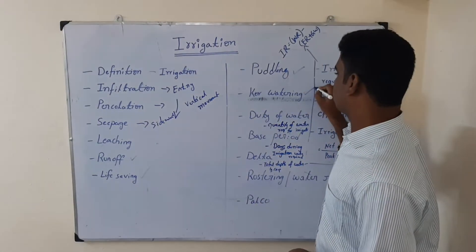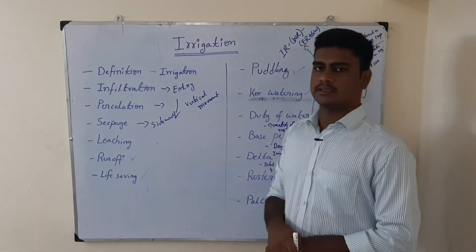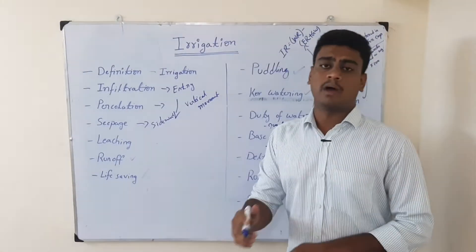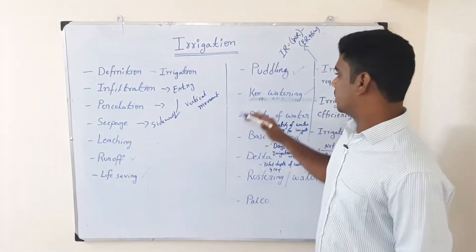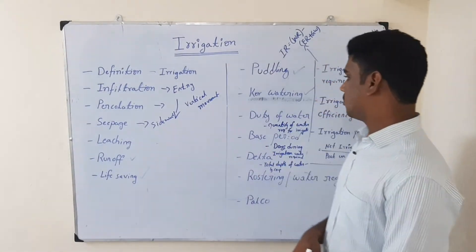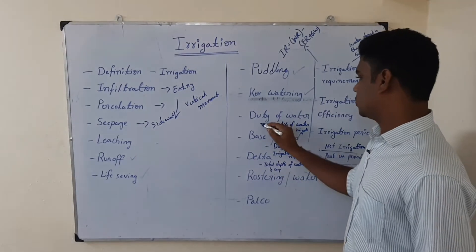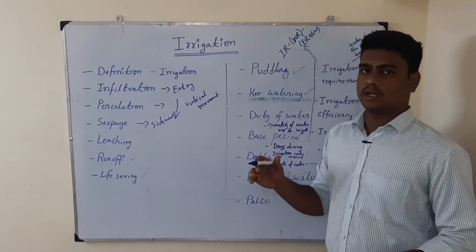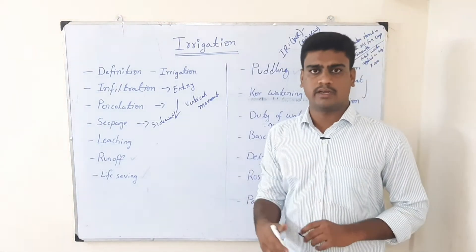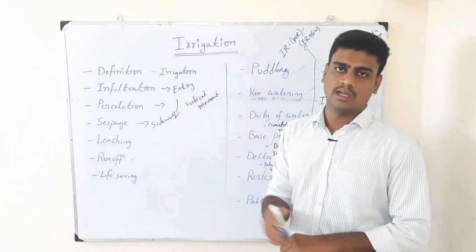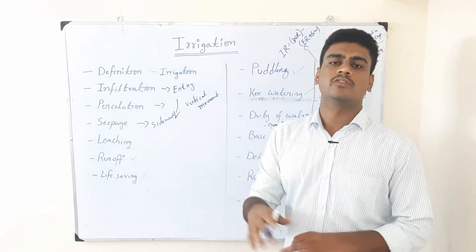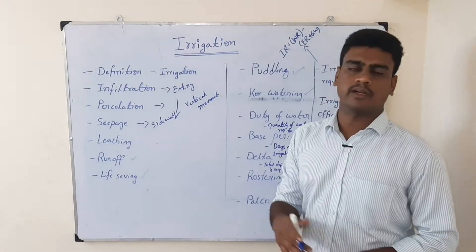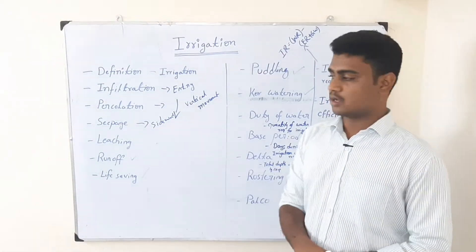The next term is core watering. Core watering is nothing but giving the first irrigation to the crop after sowing — giving the first irrigation to the crop is called core watering. Then let us see duty of water. Duty of water is nothing but the total quantity of water required by the crop for its growth until harvesting — that amount of water is called duty of water.